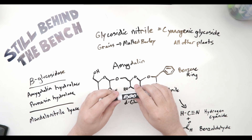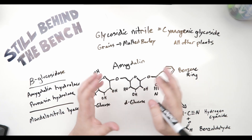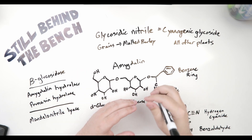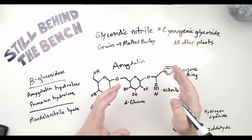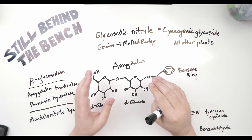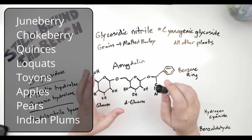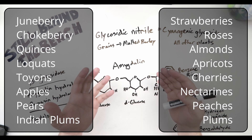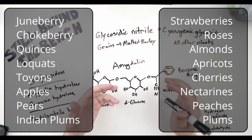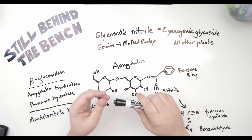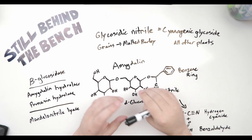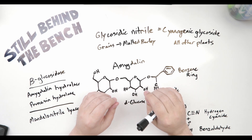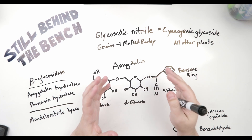A huge amount of different plants have this class of compound called a cyanogenic glycoside — there are around 25 known different ones. The entire rosaceae family creates a specific cyanogenic glycoside called amygdalin, including juneberries, chokeberries, quinces, loquats, apples, pears, strawberries, roses, and the entire genus of prunus: almonds, apricots, cherries, nectarines, peaches, and plums. Non-rosaceae plants that also produce cyanogenic glycosides include cassava, bamboo shoots, linseed (flaxseed), lima beans, cocoa yams, chickpeas, cashews, and sorghum.